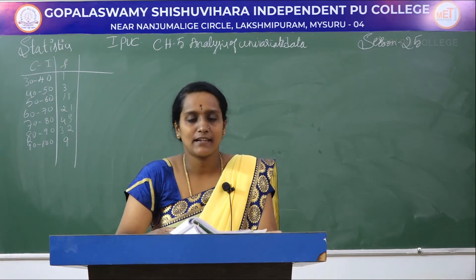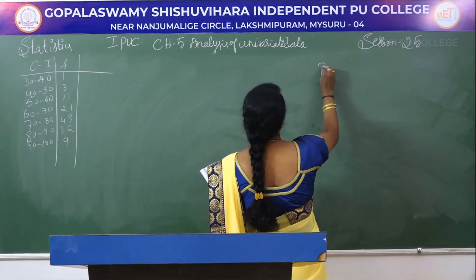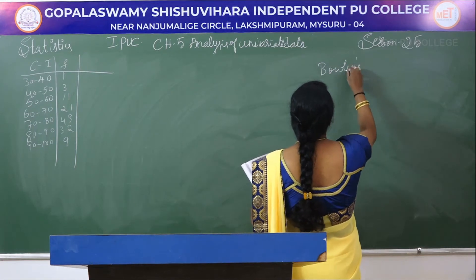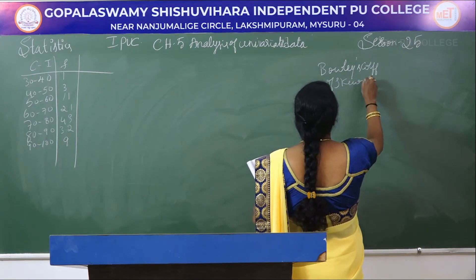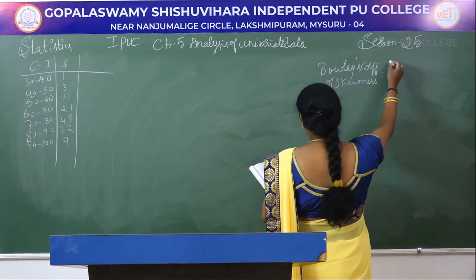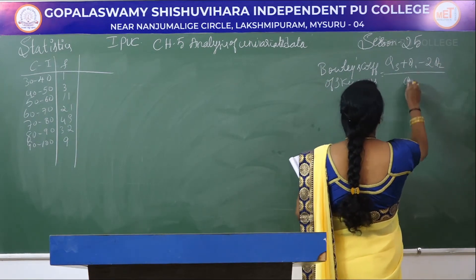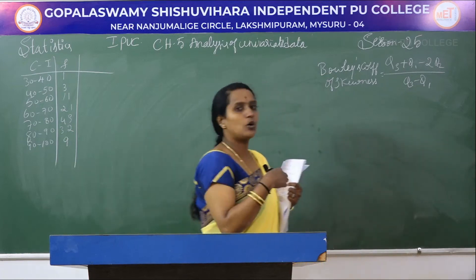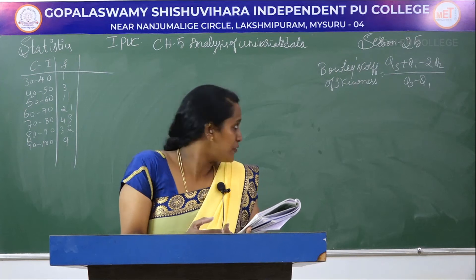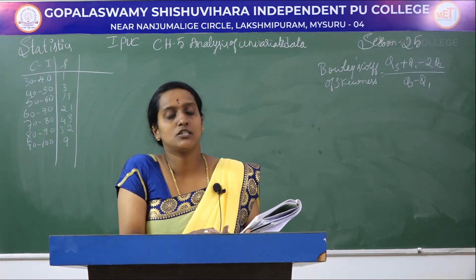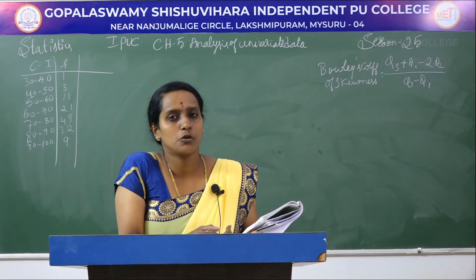For this we have to calculate Bowley's coefficient. The formula for Bowley's coefficient of skewness is: Q3 plus Q1 minus 2Q2, divided by Q3 minus Q1. This coefficient is purely based on the quartiles, so we have to calculate all three quartiles — Q1, Q2, and Q3 — first.